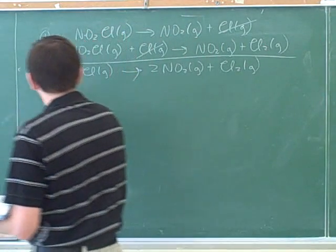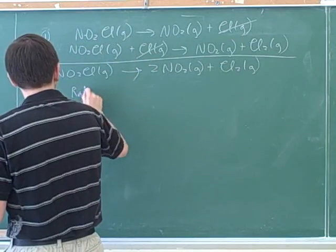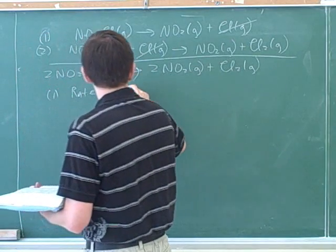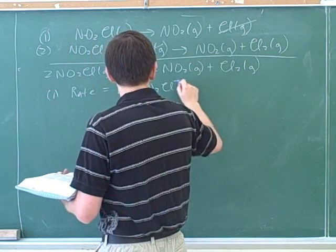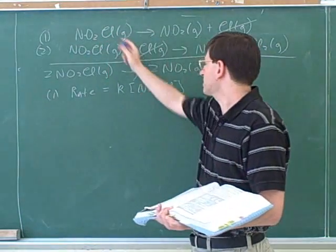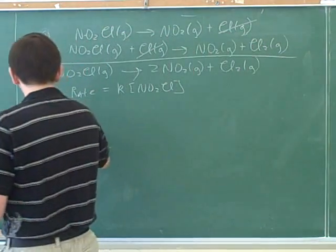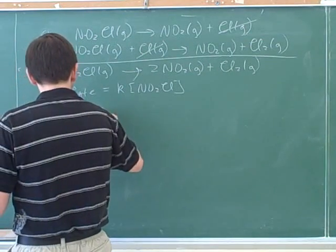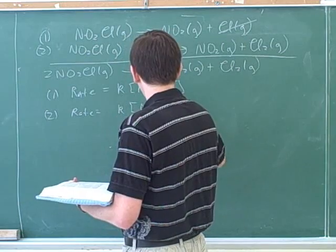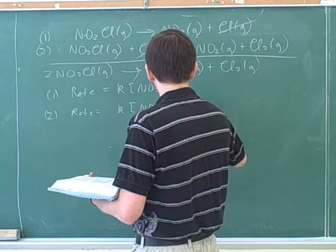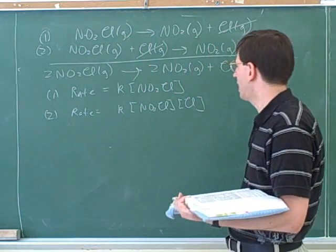So for the first step, the rate was equal to a constant times NO2Cl. This is the only thing participating in the first step. And for the second step, the rate was equal to a constant times the concentration of NO2Cl times the concentration of chlorine atoms.